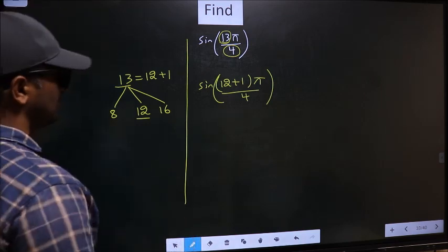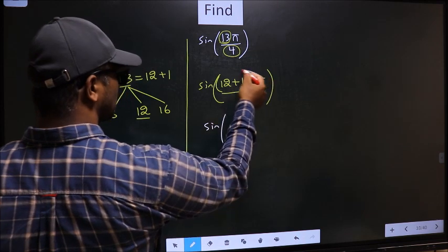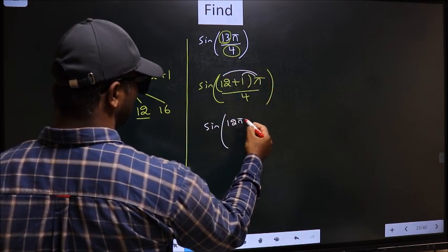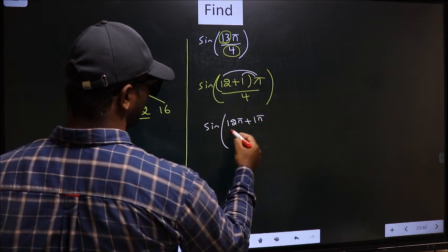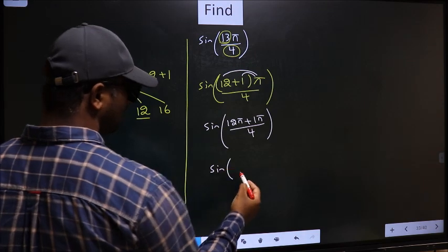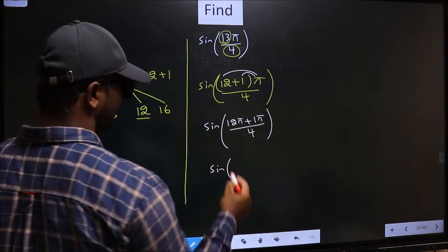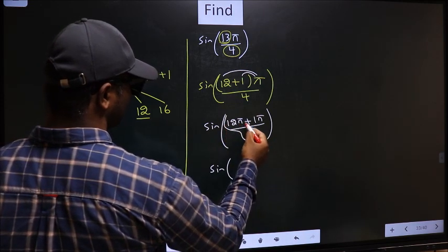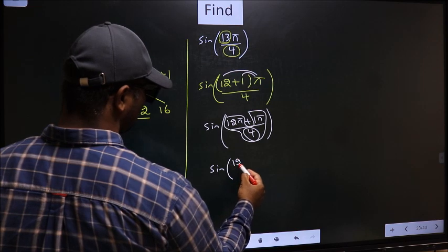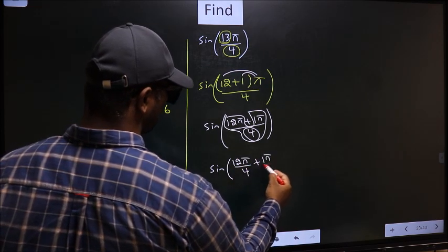Now sin—you should open up the brackets. So you get 12π plus 1π, all divided by 4. Next, sin of—now you should split the denominator in this way: that is 12π/4 plus 1π/4.